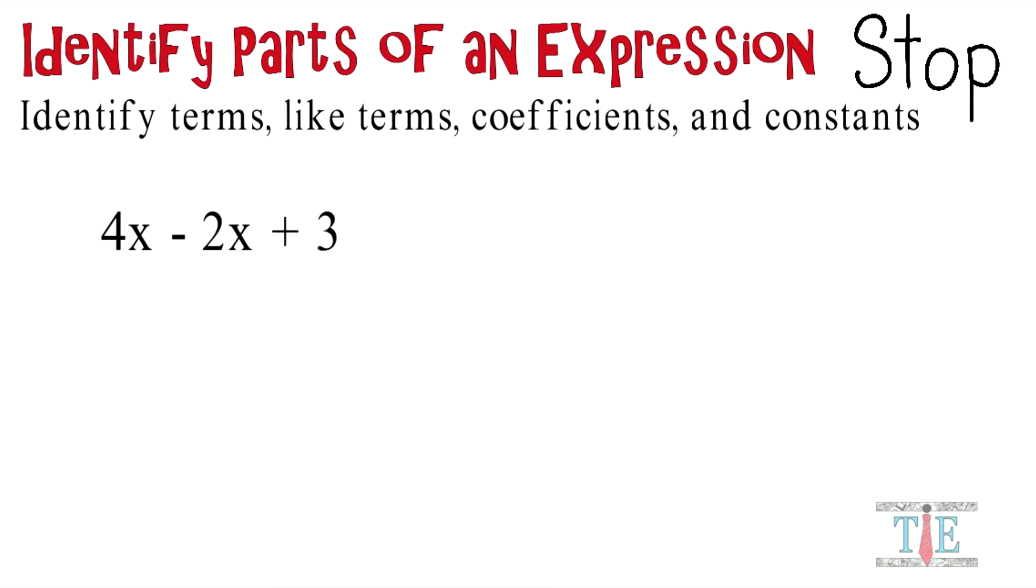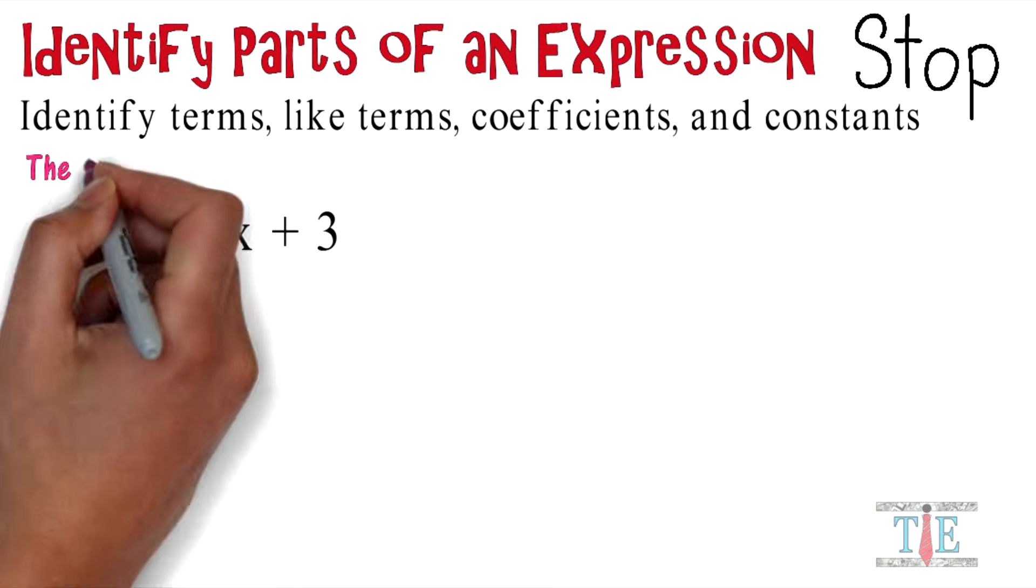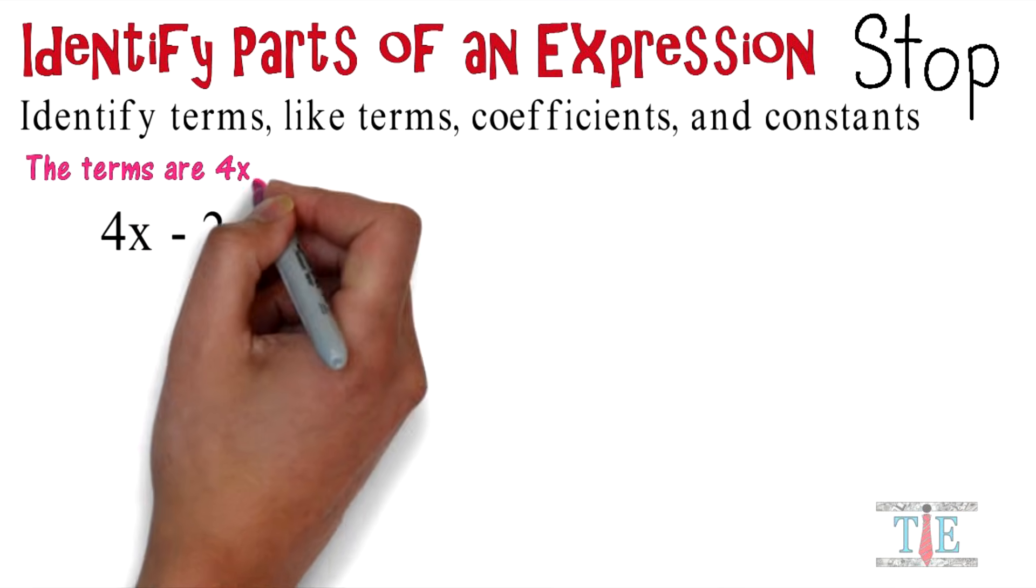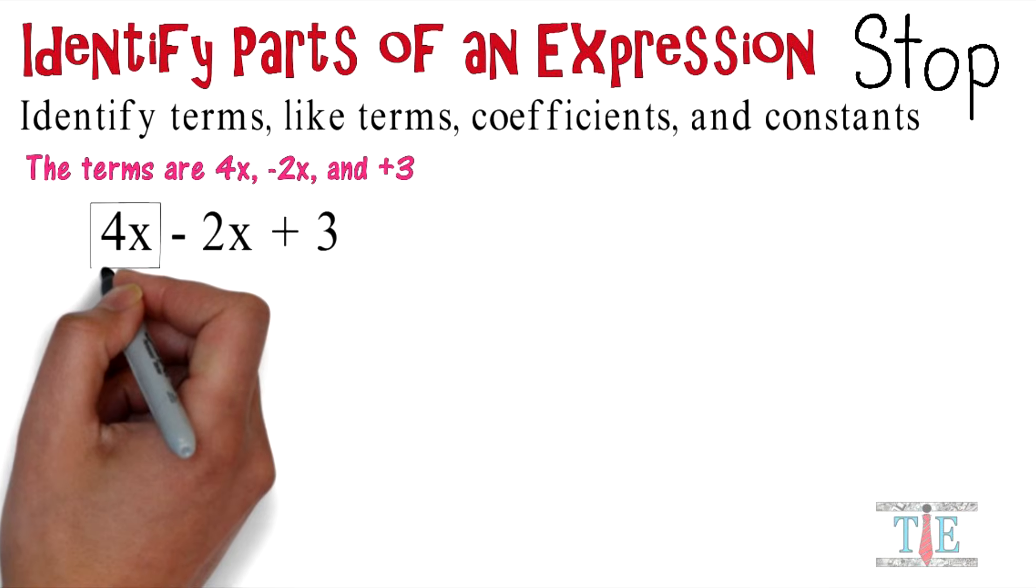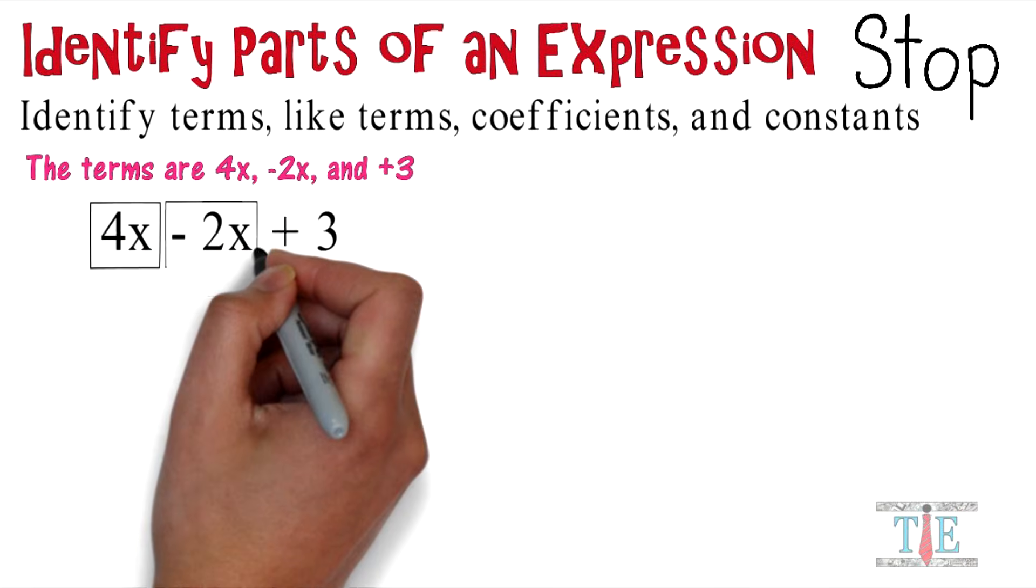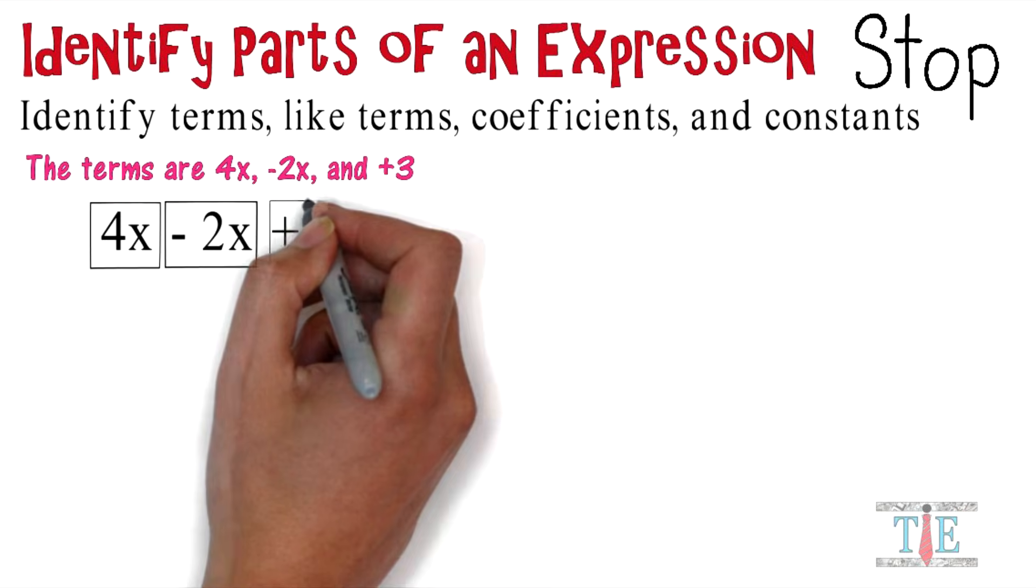And I want you to stop for a second and try to identify all the things I asked you to. And first off, let's talk about the terms. The terms are 4x, negative 2x, and plus 3. So we're going to box those.